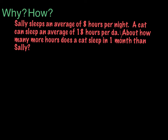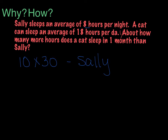So let's think for a minute. We're going to round 8 hours to 10, just to make life a little bit easier. And we're going to think about how many days are in most months — we either have 30 or 31 — so we're going to round the number of days to 30. So we're going to do 10 times 30 for Sally. Then we're going to look at the cat: 18 hours per day, rounded to 20, and we'll still use 30 days for the month.